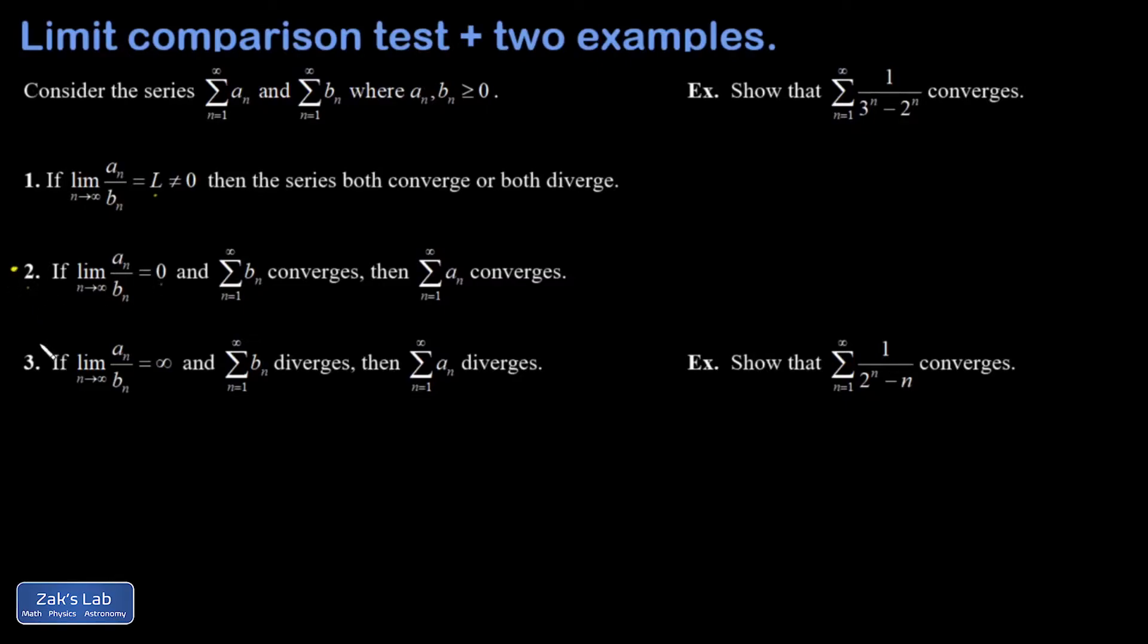So there's that case, this happens occasionally. And then the third case: if I know that the sum of the BNs diverges and the limit of AN over BN goes to infinity, that's a way of saying the terms of AN are basically bigger than those of BN. So AN is going to diverge as well.